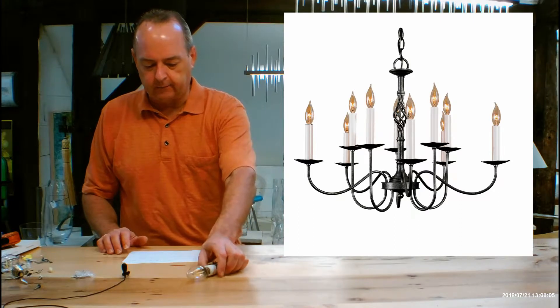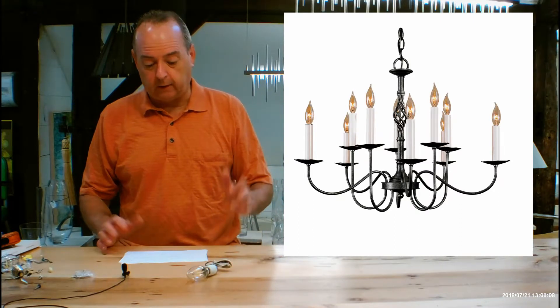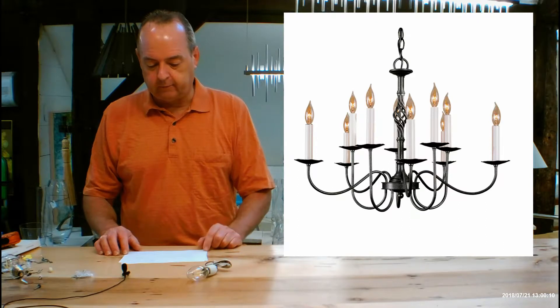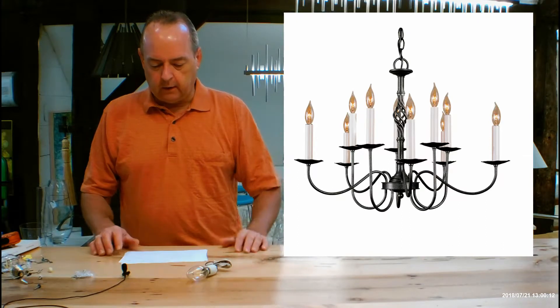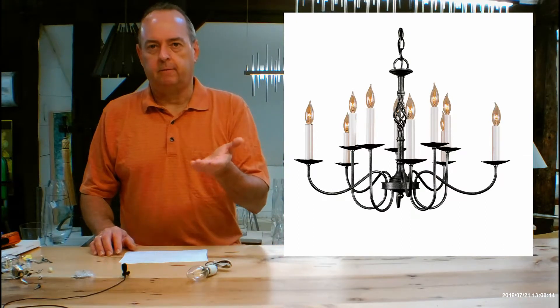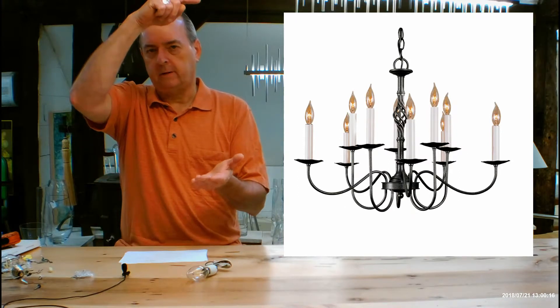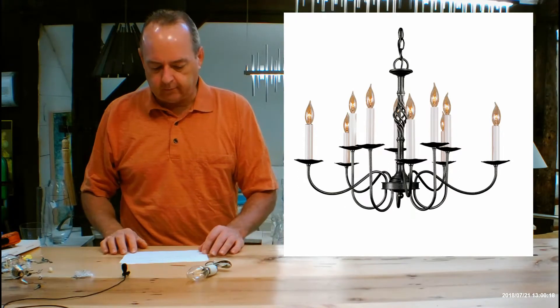Let's talk about the size to begin with. This is 19 inches tall, 27.1 inches in diameter, and that's measured from the bottom of the fixture to where the first piece of chain will start. So it's a good-sized chandelier.